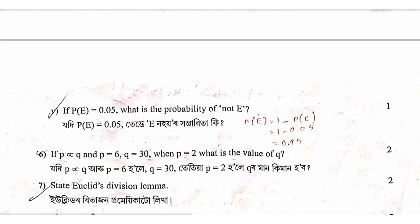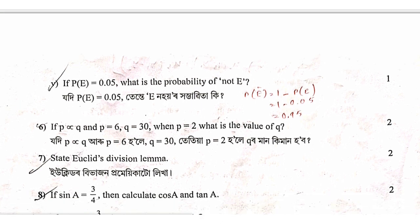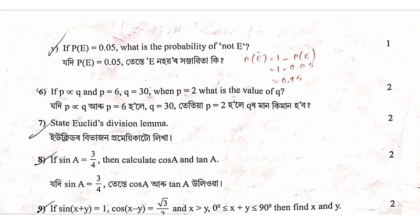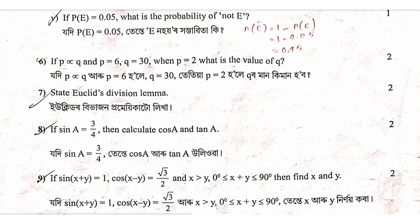For probability: if P(E) equals 0.05, then P(Ē) equals 1 minus 0.05, which is 0.95. That concludes this video. Please like and share this video. Bye-bye.